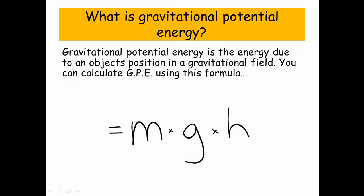Well, gravitational potential energy is the energy due to an object's position in a gravitational field. And you can calculate gravitational potential energy using this formula. So that's m times g times h.